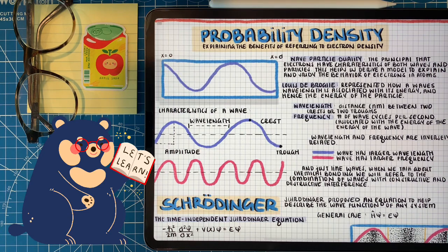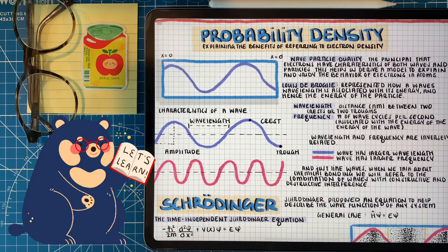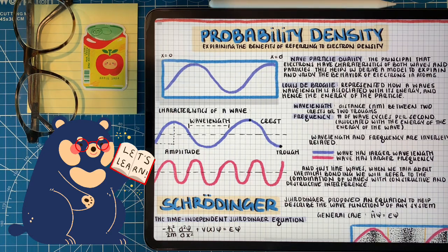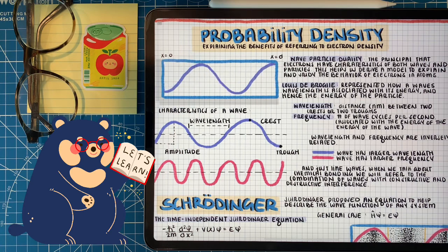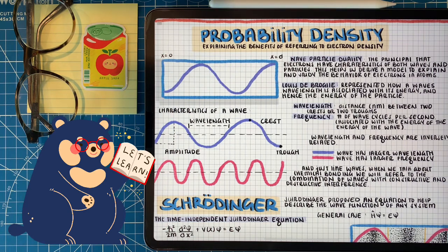Let's start off by talking about some of the characteristics of waves. We have the crest, which is the high point of the wave, and the trough, which is the low point. The wavelength is the distance between two crests or two troughs. We have the amplitude, which is the height of the wave. Then we have the frequency — the number of wave cycles that happen per unit of time, usually related to seconds.